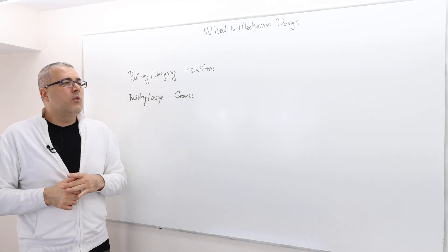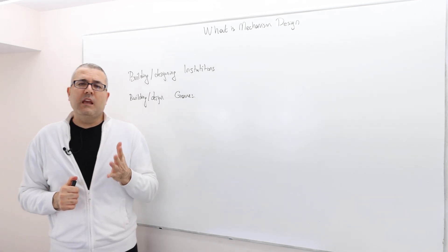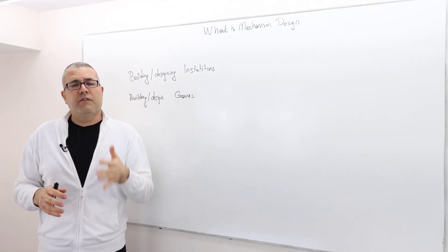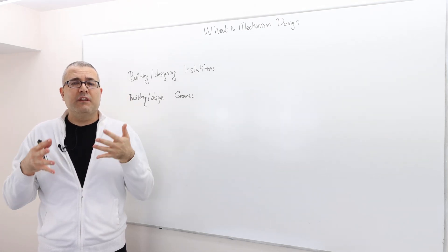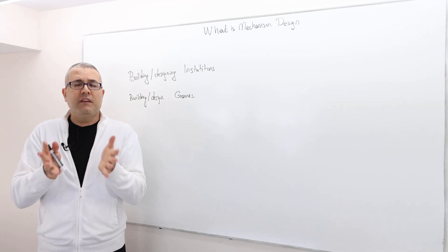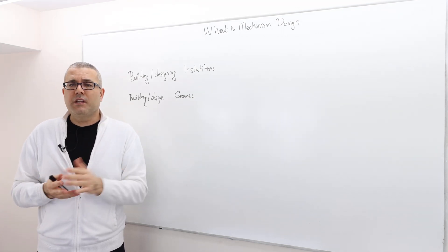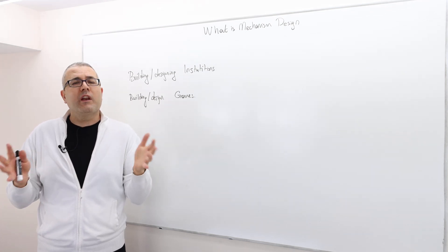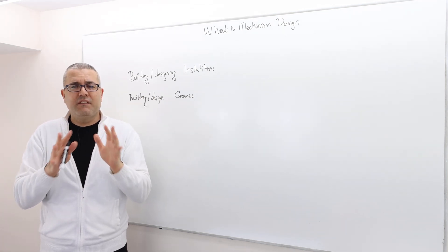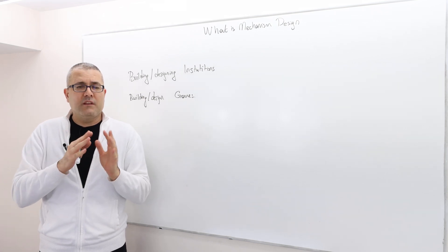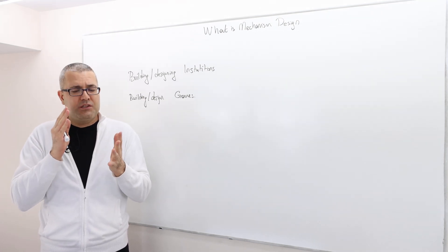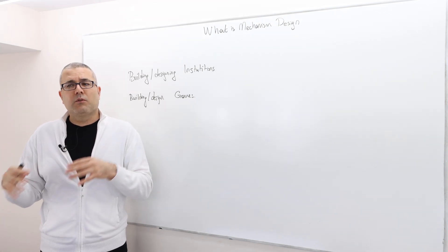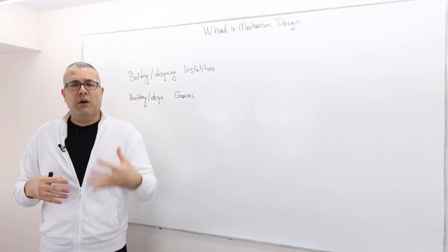So what do we mean? Well, up until this point in game theory, you always learned how to solve a game, given that you were given a game. We always gave you a game — whether it's an auction game, a prisoner's dilemma, a rock-paper-scissors game, whatever — with a set of players, set of strategies, payoff functions, and so on. All you were supposed to do was learn how to solve those games.